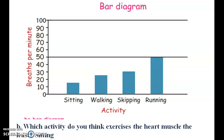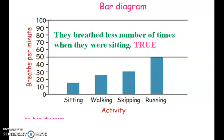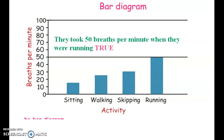Which activity exercises the heart muscles the least? Sitting is the answer. They breathed more when they were walking. They breathed less when they were sitting — that is true. They took 50 breaths per minute when they were running — that is correct.